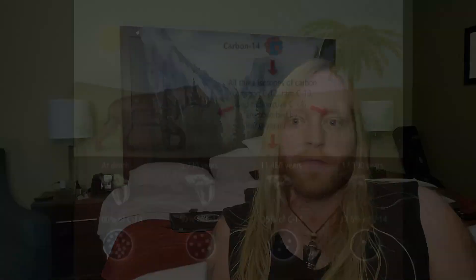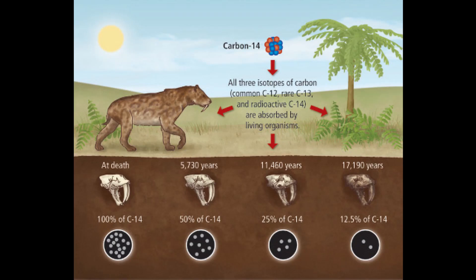Once you die, that stops — you're not taking on any new carbon. So carbon-14, which is an unstable isotope of carbon, starts to break down very slowly into nitrogen-14. This has a half-life of about 5,700-some-odd years. So after something has died, after about almost 6,000 years, it has half the amount of carbon-14 that it had when it was still alive. This is really convenient because then we can calculate how far down the line it's been since that organism died.